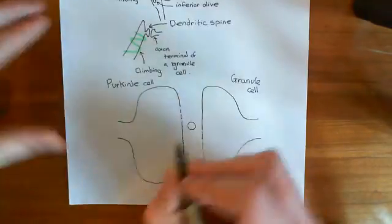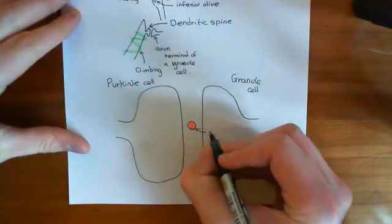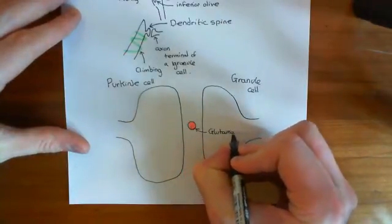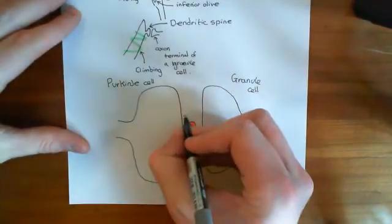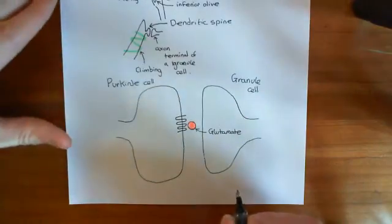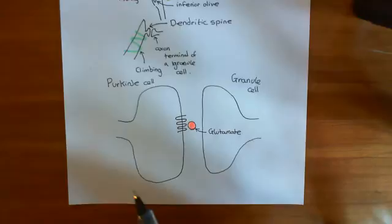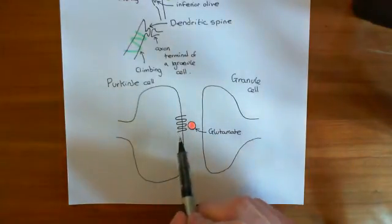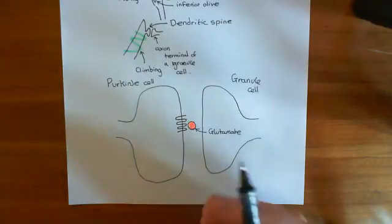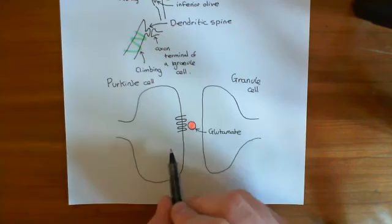I'll draw glutamate as a little circle. So the granule cell has released glutamate, and it's going to diffuse across the synaptic cleft and bind to these type 1 metabotropic glutamate receptors. There are basically eight different genes coding for metabotropic glutamate receptors. Metabotropic glutamate receptors are GPCRs — G-protein-coupled receptors — rather than being ligand-gated ion channels, which is what ionotropic glutamate receptors are.